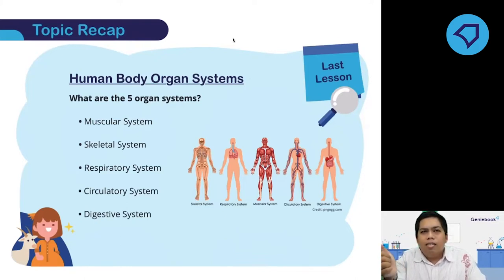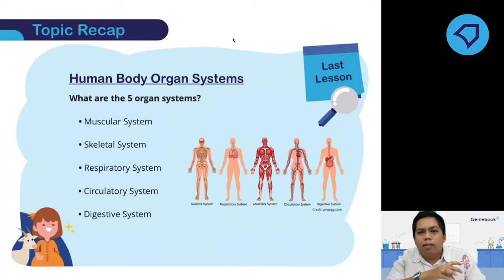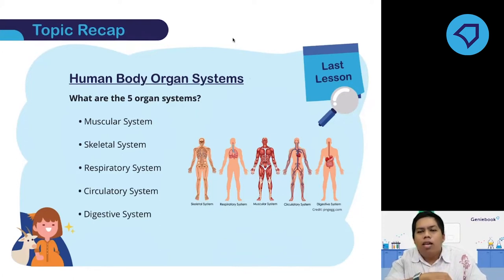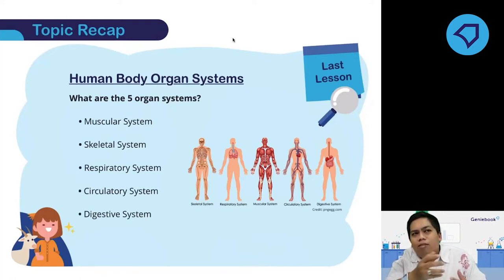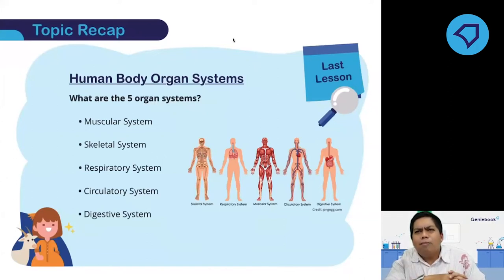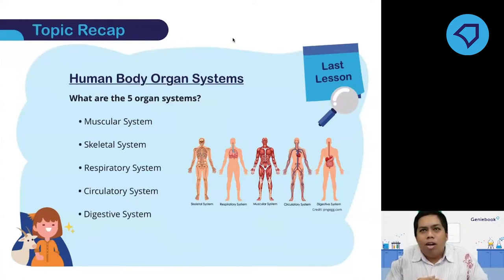The five systems are: the skeletal system, the respiratory system, muscular system, circulatory system, and digestive system. By now, you should know the main functions for each of the systems. Let's have a quick refresher. For the skeletal system — does anyone remember? The main function is to protect the important organs and to shape your body.